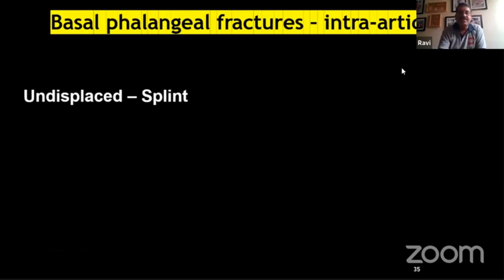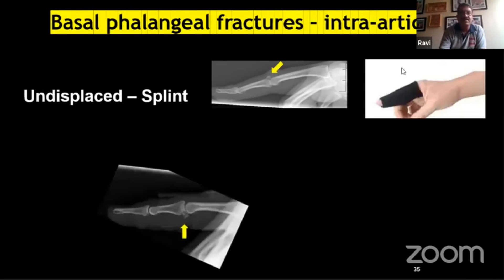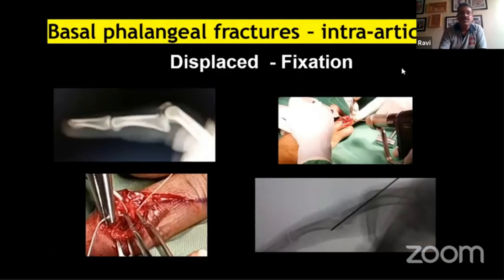For intra-articular fractures involving the base of the PIP joints, if undisplaced they can be treated by splints. A volar undisplaced fracture can be managed with a dorsal blocking splint with good results. If displaced dorsally — representing a central slip bony avulsion — these can be repaired with a screw if the fragment is large enough, or with a suture anchor. A K-wire provides additional stabilization for the PIP joint and is removed after a couple of weeks.